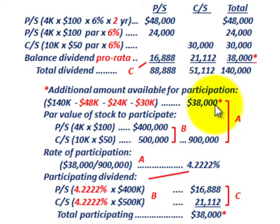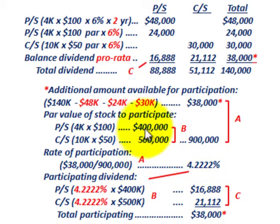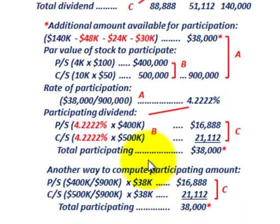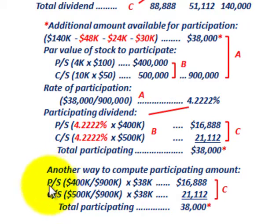That's what we had to allocate — the $38,000 that was remaining — on a pro-rata basis, based on the par value and that rate of participation. Before we finish, let's look at another way to compute the participating amount, which may be a little bit easier.